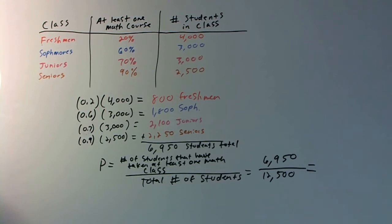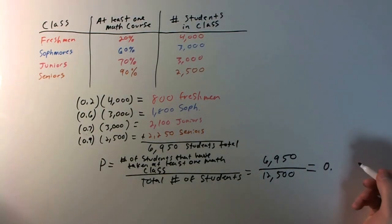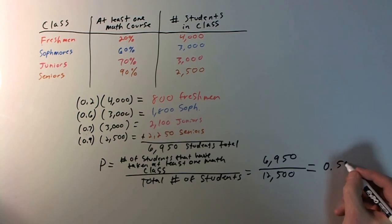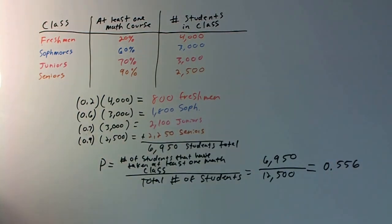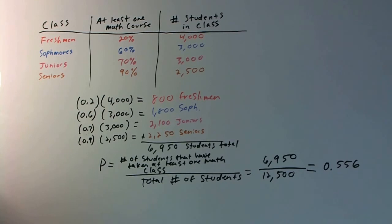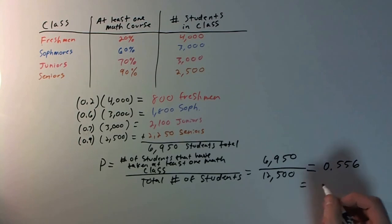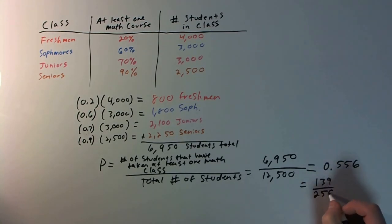And that's going to be equal to about 0.556 — so just over a 50% probability that we'll pick one student who has actually taken a math class. Or, if you simplify this fraction, it ends up being 139 divided by 250.